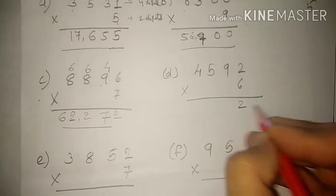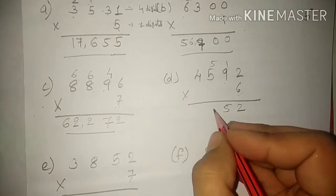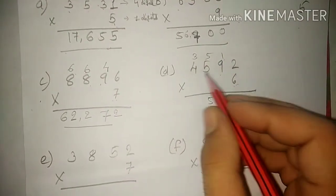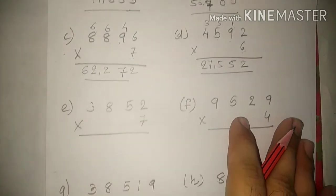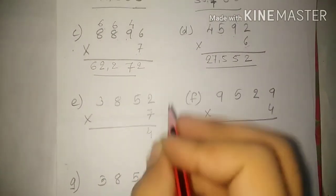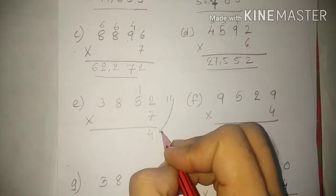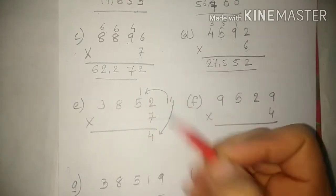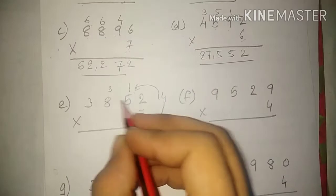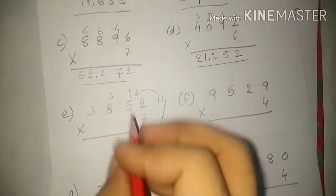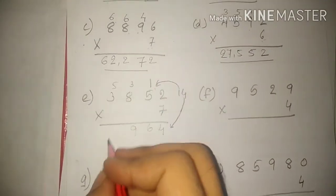The next sum: 6 twos are 12, 9 sixes are 54, 54 plus 1 is 55, 6 fives are 30, 30 plus 5 is 35. Next: 6 fours are 24, 24 plus 3 is 27. Moving to the next sum: 7 twos are 14 — 4 written here, 1 will go up as carry. 7 fives are 35, 35 plus 1 is 36. 7 eights are 56, 56 plus 3 is 59. Next is 7 threes are 21, 21 plus 5 is 26.